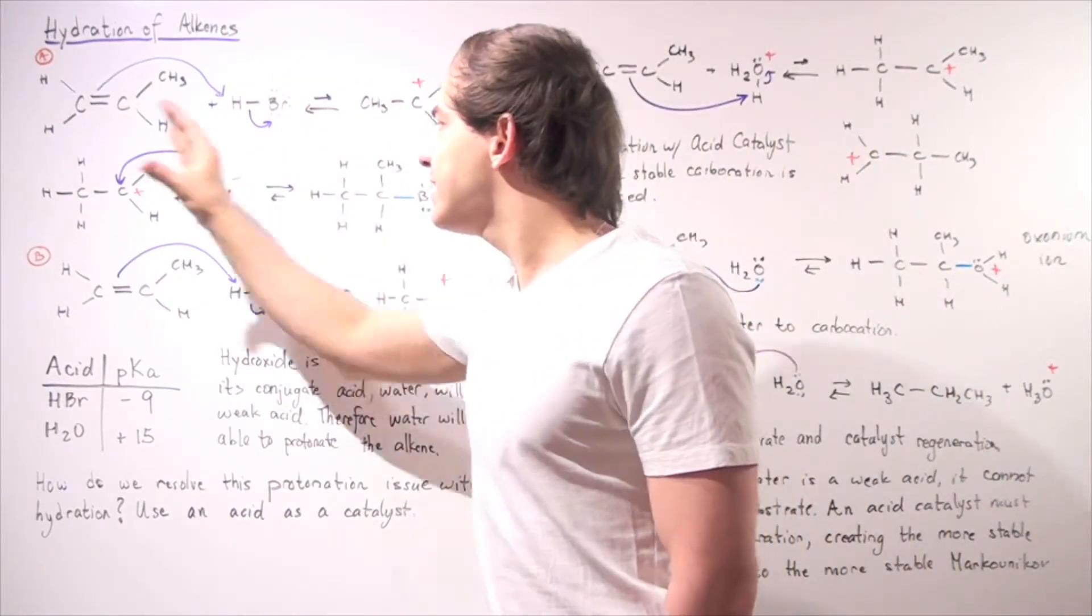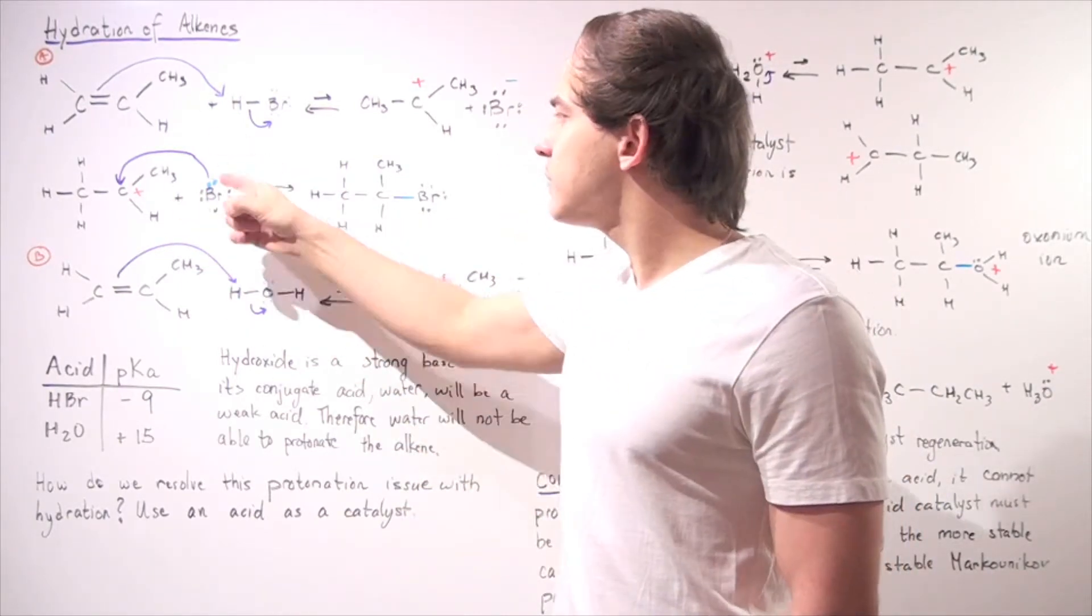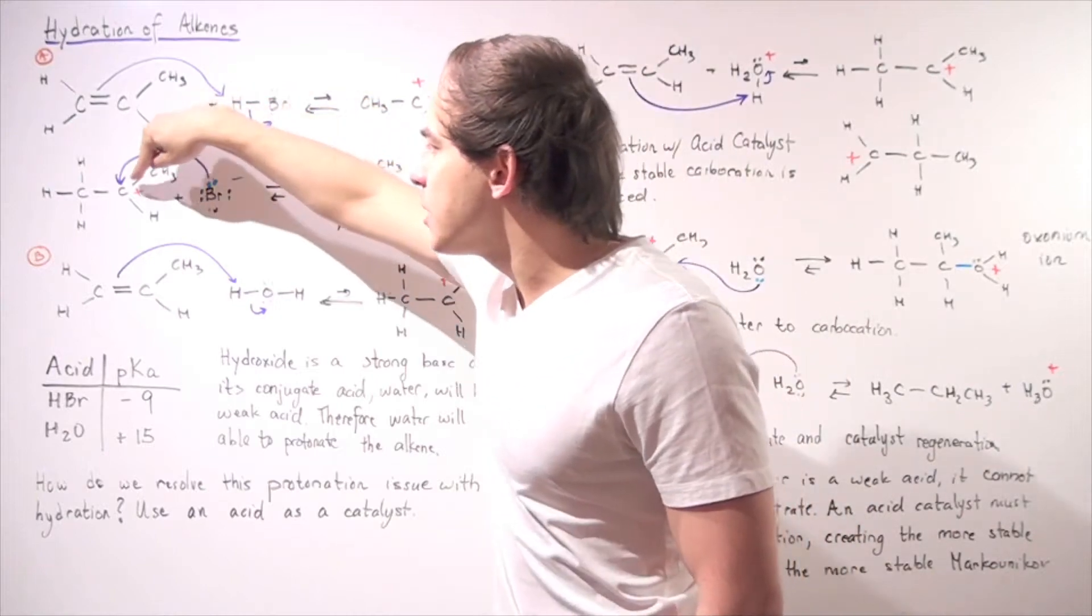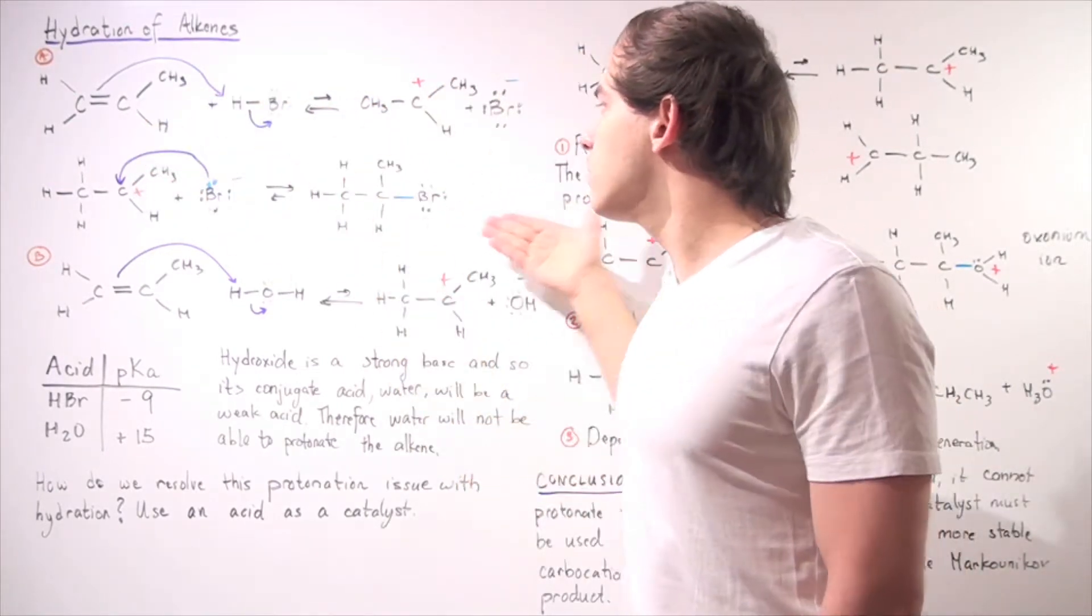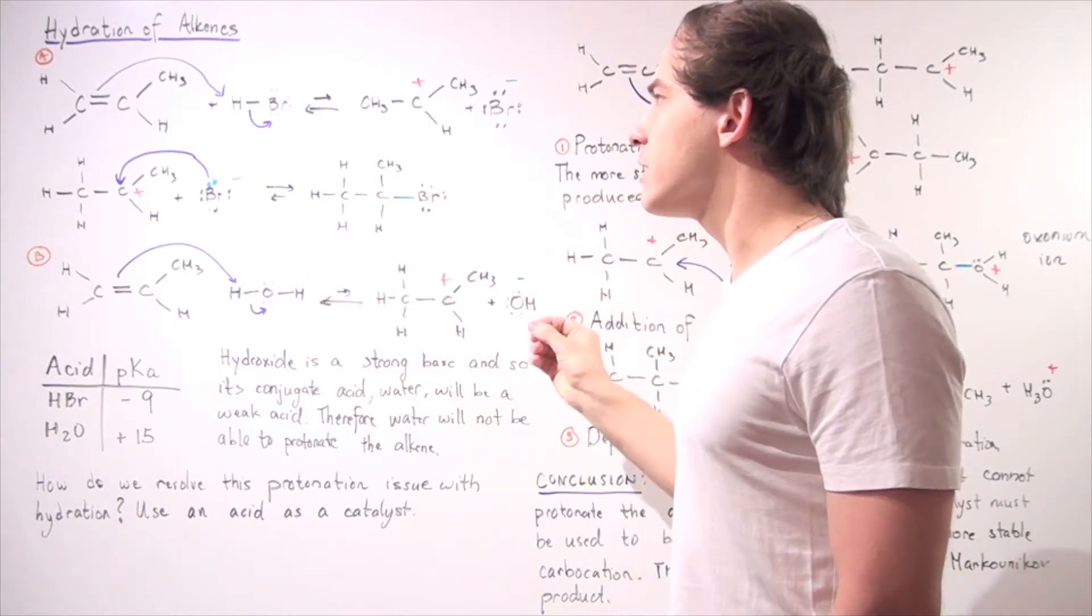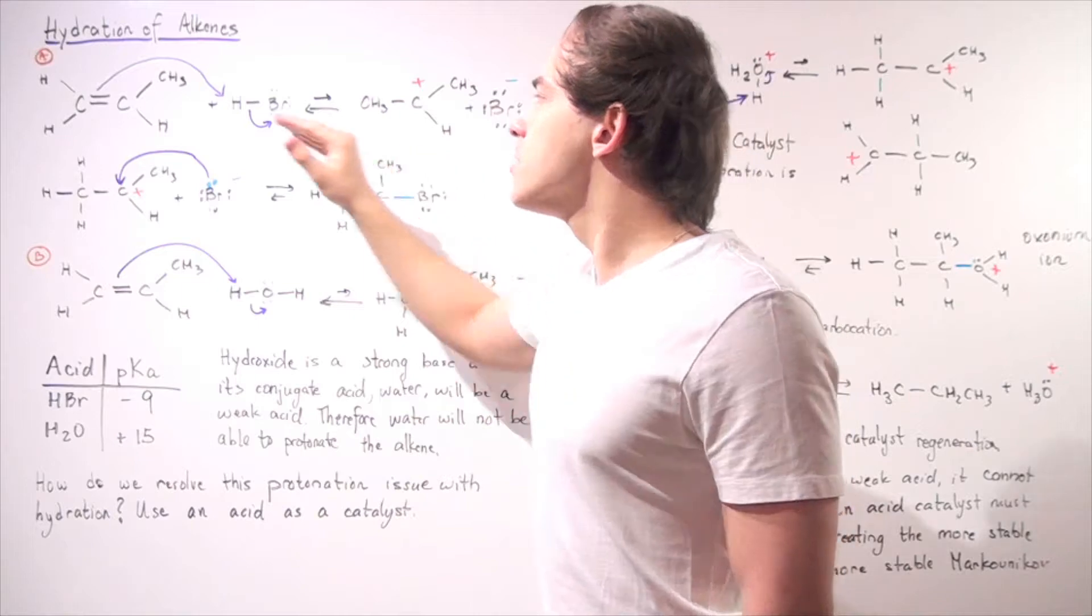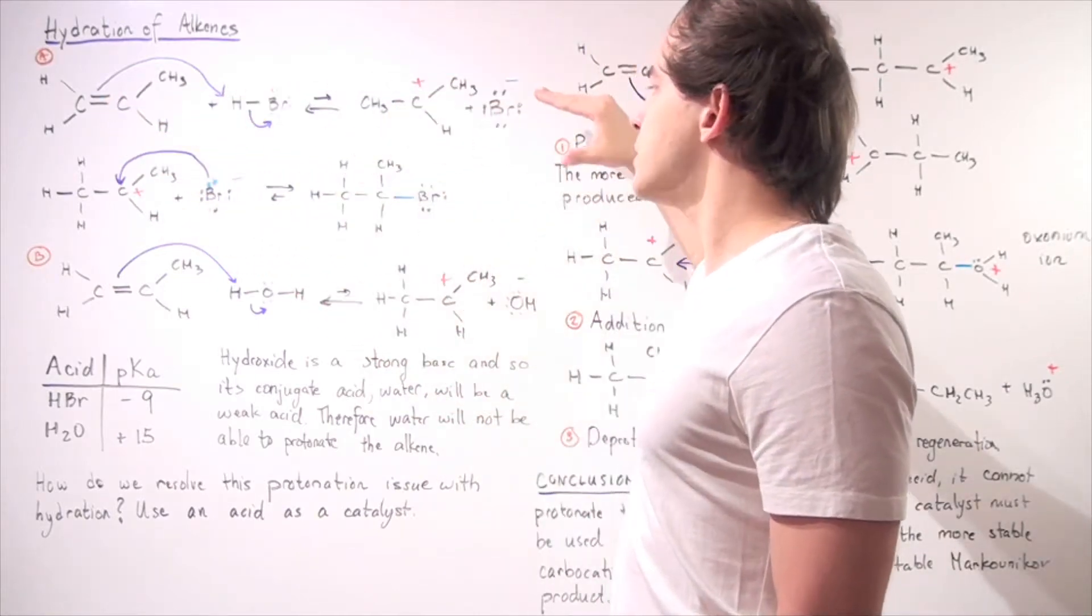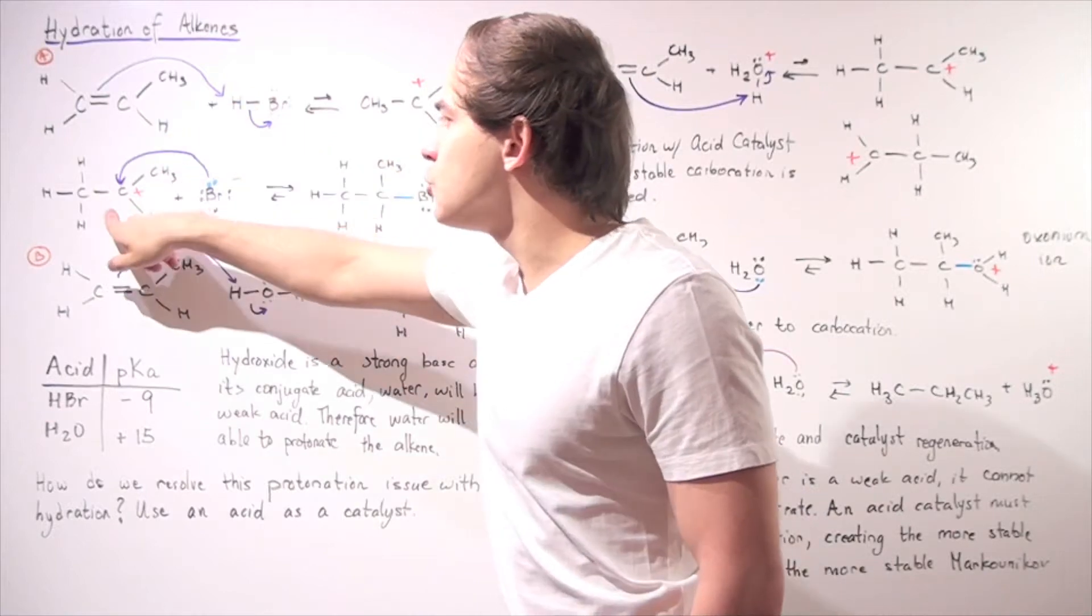Now in the second step, we have our bromine acting as a nucleophile using its pair of electrons to capture this positively charged carbocation carbon. And we form the following final product. So this is known as a hydrohalogenation reaction. The first step is our protonation step. The second step is our nucleophilic addition to our carbon.